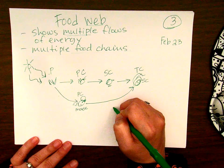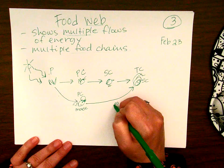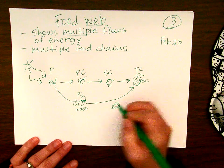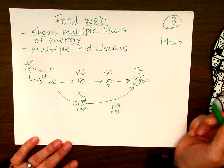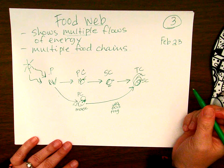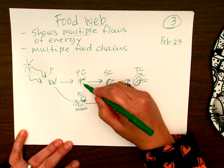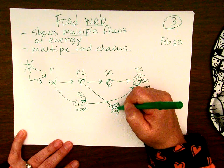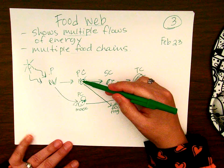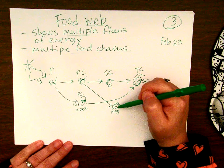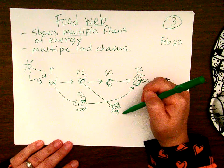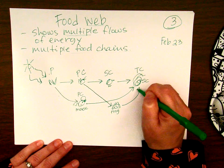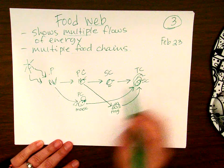Let's add in a frog. Frogs like to eat insects, so the frog will probably eat the grasshopper. I'm going to make an arrow towards the frog from the grasshopper, because the energy the grasshopper has is going to go into the frog. Snakes also like to eat frogs, so I'm going to put an arrow towards the snake from the frog.